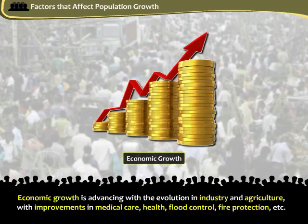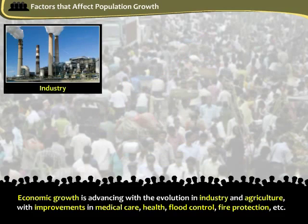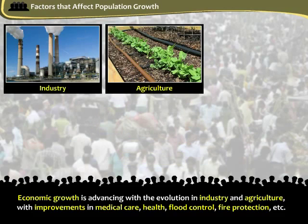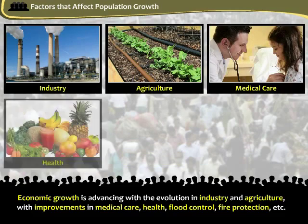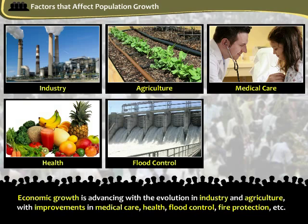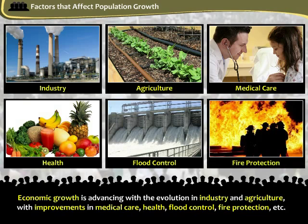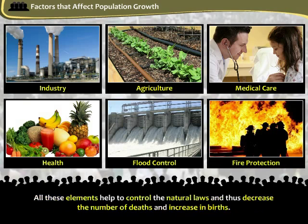Economic growth is advancing with the evolution in industry and agriculture, with improvements in medical care, health, flood control, fire protection, etc. All these elements have helped control the natural laws and thus decrease the number of deaths and increase in births.